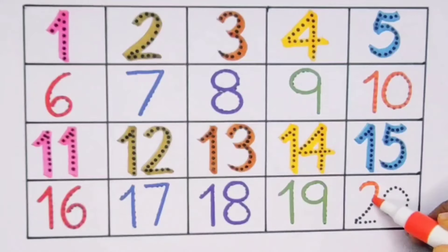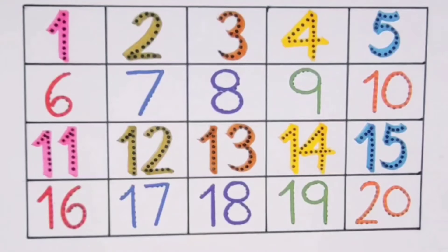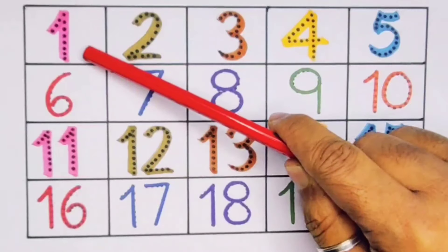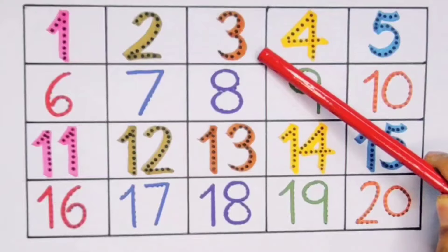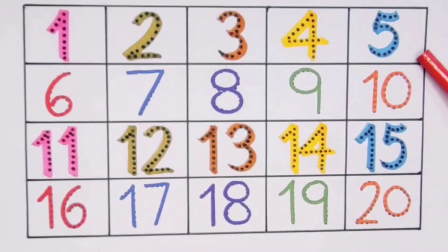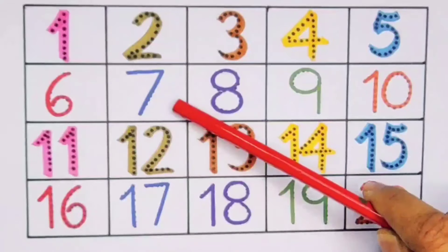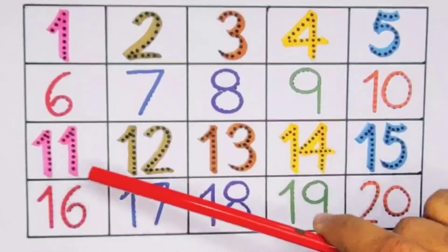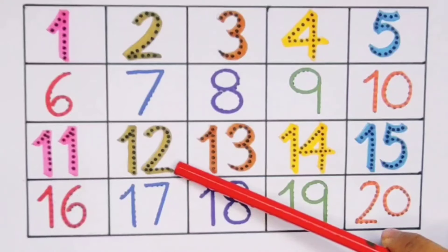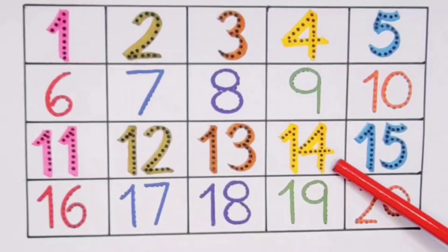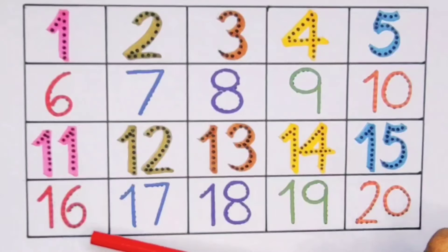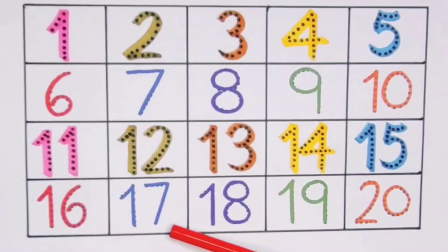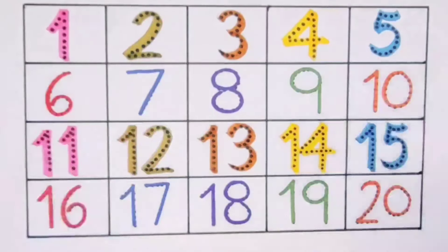What we learned: we learned one, two, three, four, five, six, seven, eight, nine, one zero ten, one one eleven, one two twelve, one three thirteen, one four fourteen, one five fifteen, one six sixteen, one seven seventeen, one eight eighteen, one nine nineteen, two zero twenty.